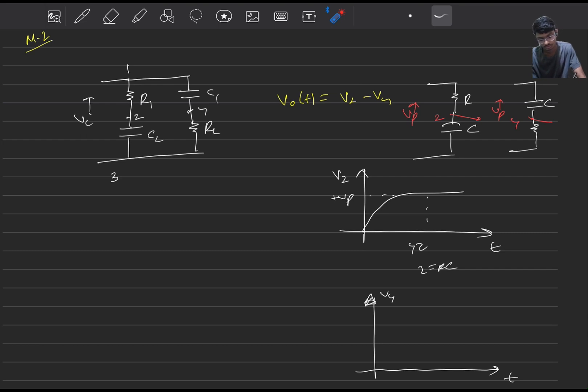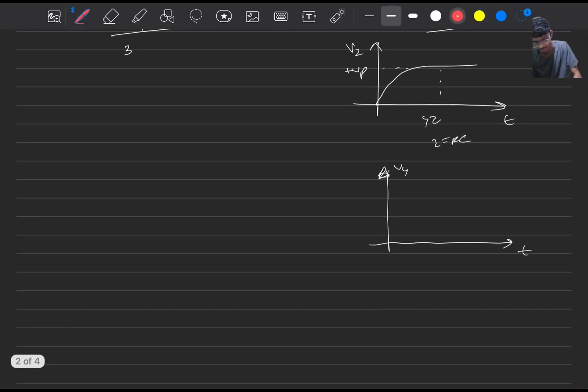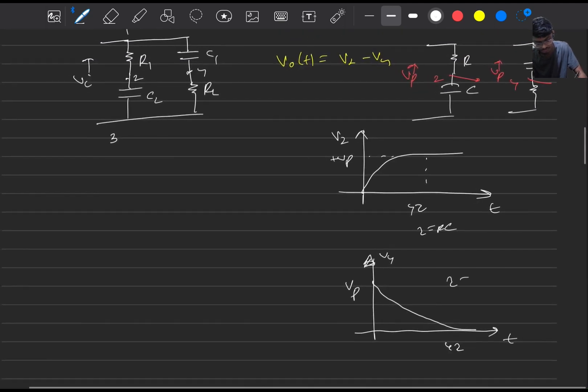So V0 will be equal to zero at t equals infinity. So this V4 will look like something like this: plus Vp to zero around 4 tau time. And here also the time constant is same, nothing new.